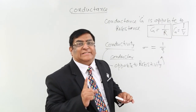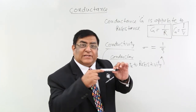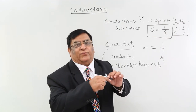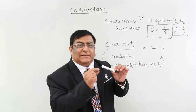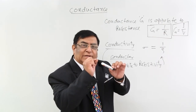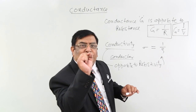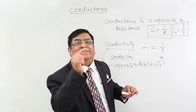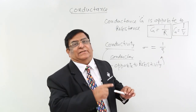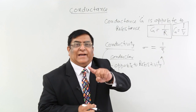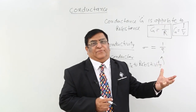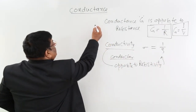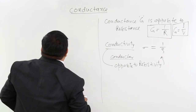For example, we see a current flowing in a conductor — current is macroscopic. But if we go inside it, at each unit area there is a current density. That current density is the miniature form. Now we will see the miniature forms.